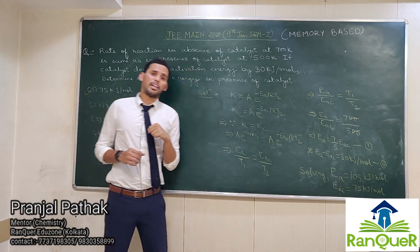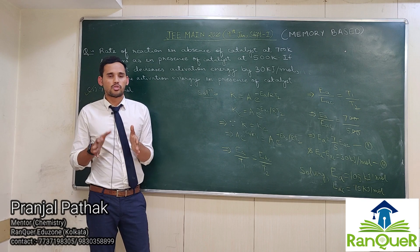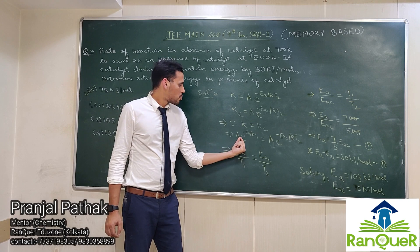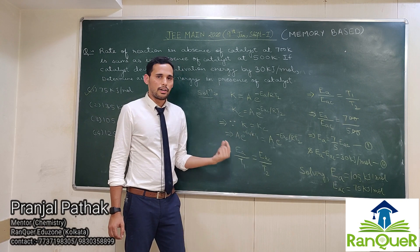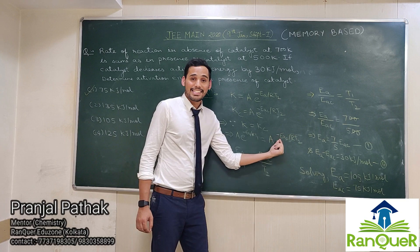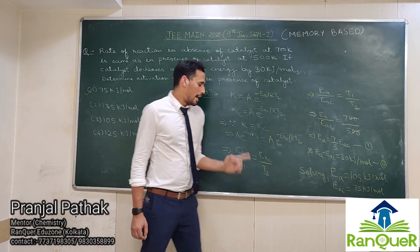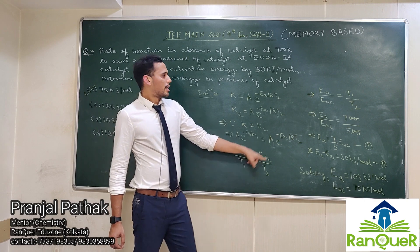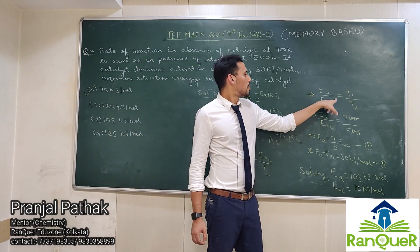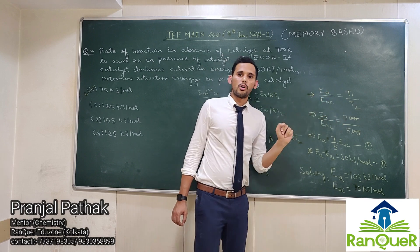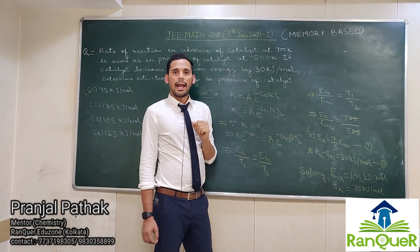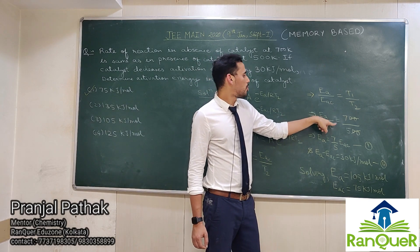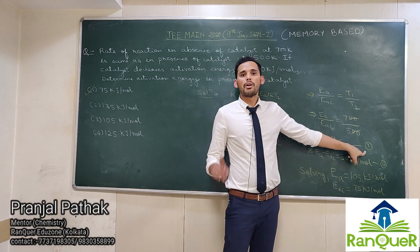Since both rate constants are equal, we equate K with Kc to get: A·e^(−Ea/RT1) = A·e^(−Eac/RT2). This simplifies to Ea/T1 = Eac/T2, and therefore Ea/Eac = T1/T2. With T1 = 700 Kelvin and T2 = 500 Kelvin, we get Ea/Eac = 7/5. This is equation number 1.